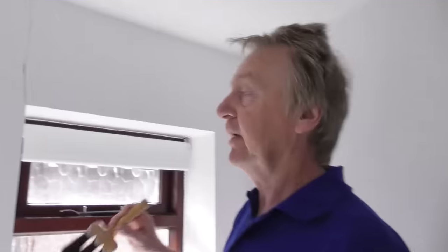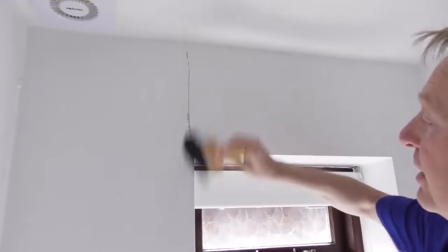Now what that's going to do is form a wedge shape in the plaster which is going to make it impossible for the filler to come out of the wall. So that's what I've done. I'm just going to dust it off to get rid of the loose debris. Now that's ready for me to put the filler in.